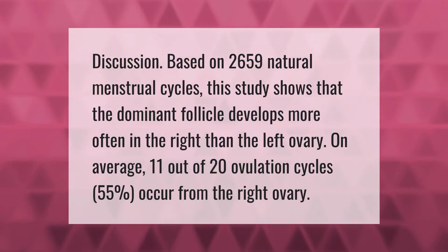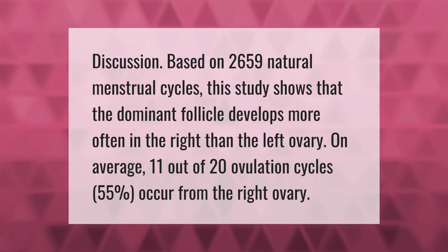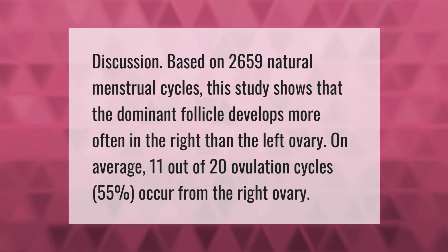Based on 2,659 natural menstrual cycles, this study shows that the dominant follicle develops more often in the right than the left ovary. On average, 11 out of 20 ovulation cycles — 55% — occur from the right ovary.